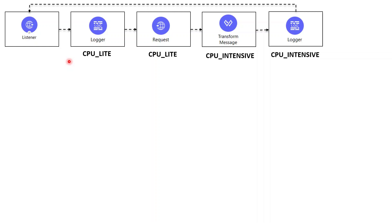In a typical flow, a logger runs on CPU Light, then a requester also runs on CPU Light because it's non-blocking I/O, then a Transform Message runs on CPU Intensive, and the final logger also runs on CPU Intensive — since the logger task can be done by a CPU Intensive thread as well, there is no thread switch in order to save latency. This execution looks perfectly fine, but there are a couple of problems.